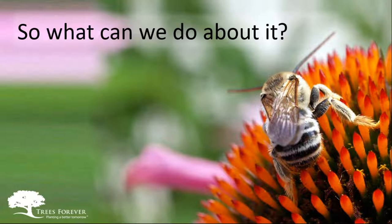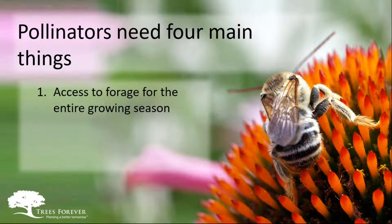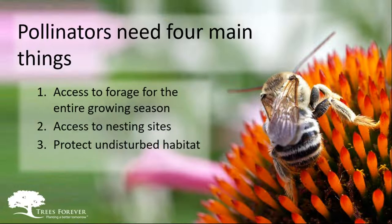So what can we do about it? If we're to protect pollinators, we need to know what they need and how to protect them. Basically, pollinators need four main things: access to forage for the entire growing season, access to nesting sites, protection of undisturbed habitat, and protection from pesticides.